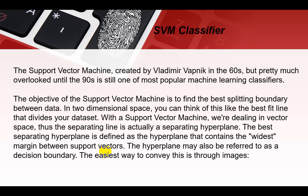With the Support Vector Machine, we are dealing with a vector space. The separating line is actually a separating hyperplane. When we create a separating line, we call it a hyperplane. The best separating hyperplane is defined as the hyperplane that contains the widest margin between support vectors. The maximum margin between the two classes gives us the best fitted hyperplane.